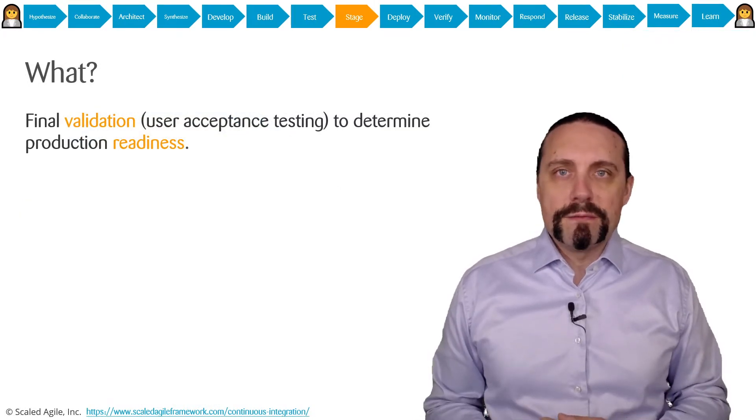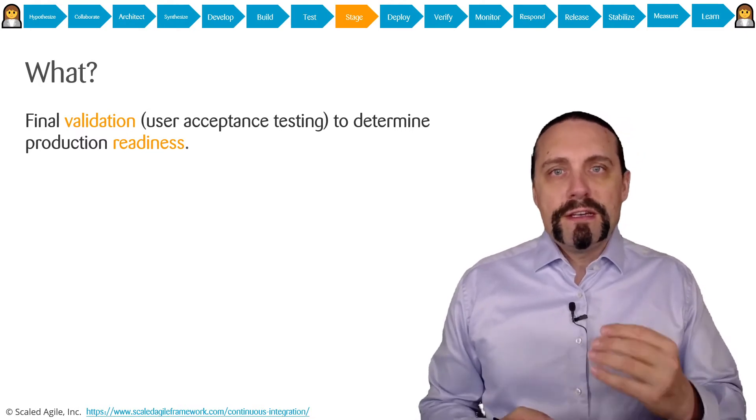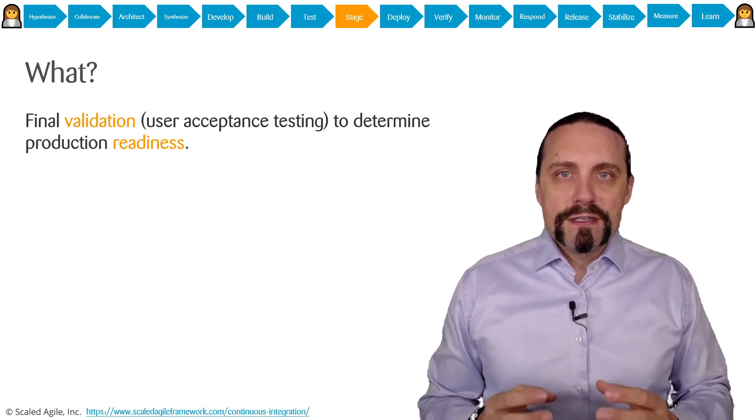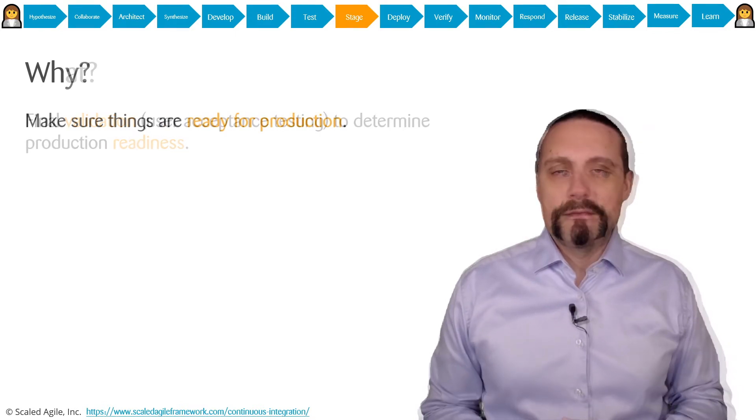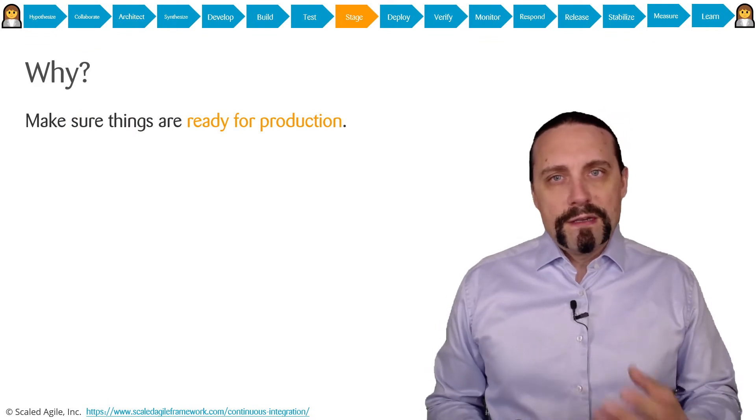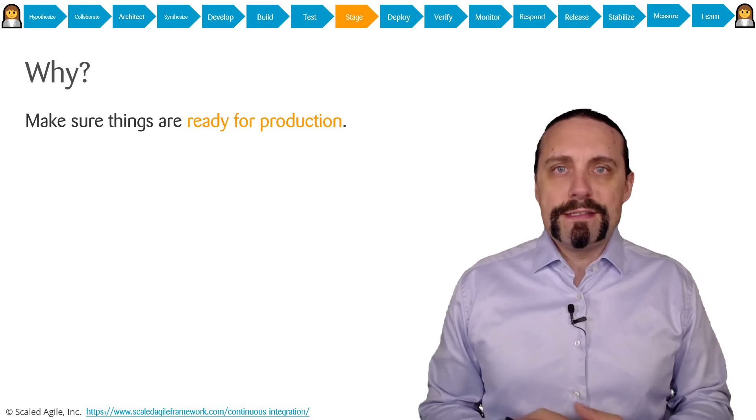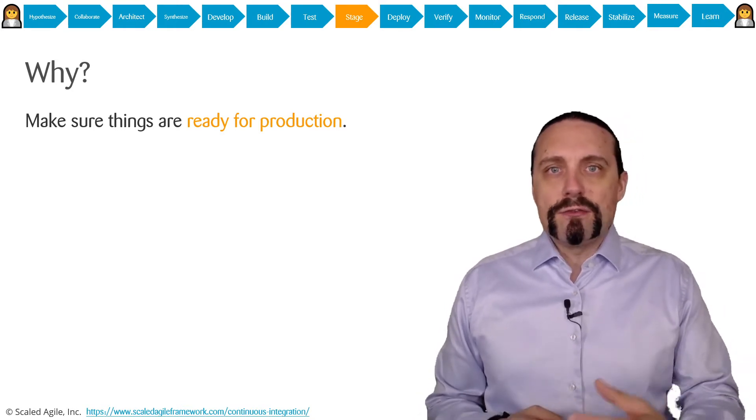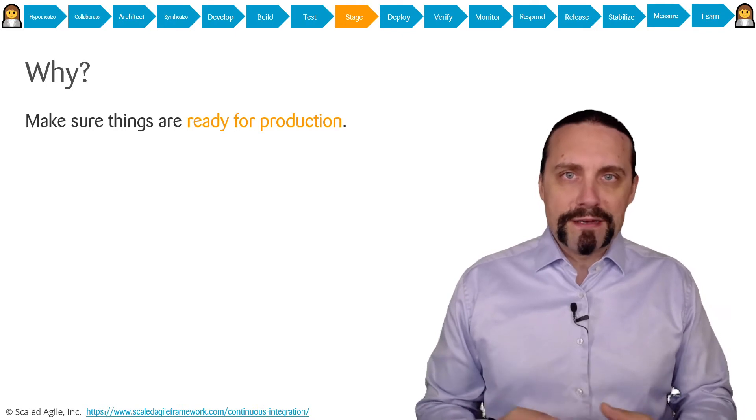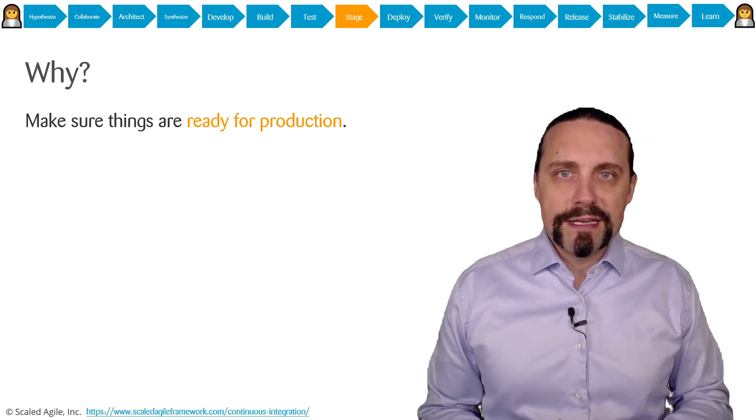In the stage environment we are doing the final validation to find out if we are production ready or not. So there we are going to do the user acceptance testing. Why are we doing this? We need to be sure that we are production ready and this is also a very good chance for the business to have a look at what we have in the stage environment and to do the final user acceptance tests there.